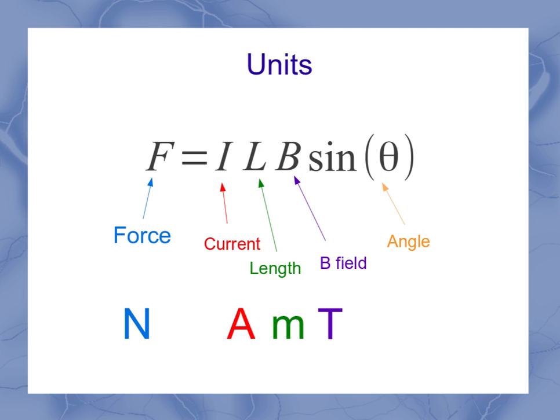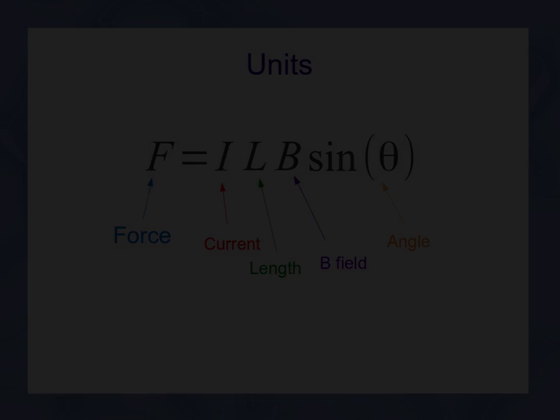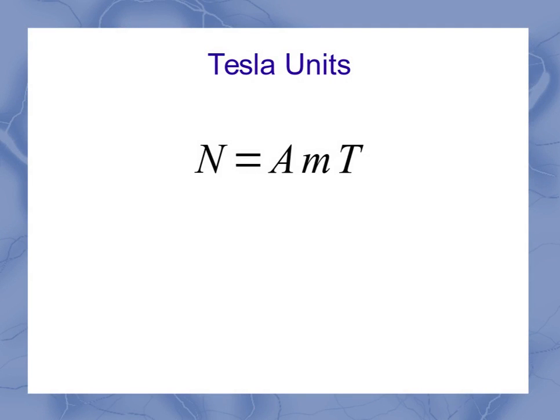Our B field is going to be expressed in Tesla. And the angle, it might be degrees or radians, but once you take the sine of that angle, there's no units anymore. So that leaves us with a newton is equal to an amp meter Tesla.